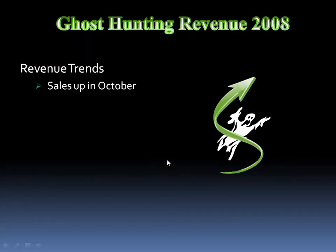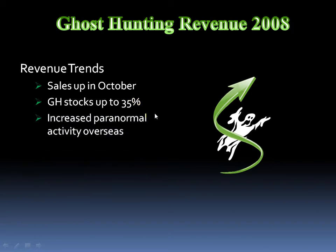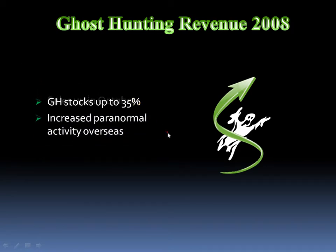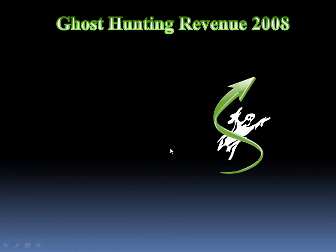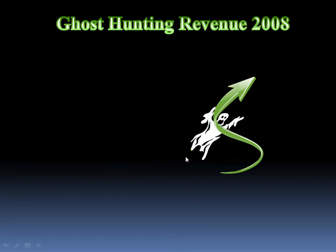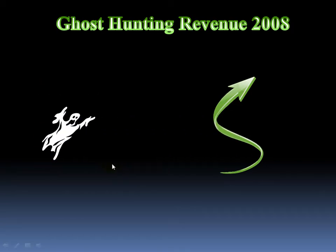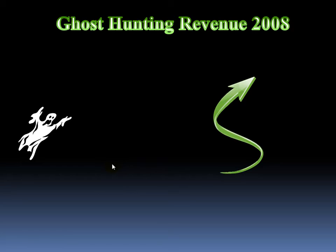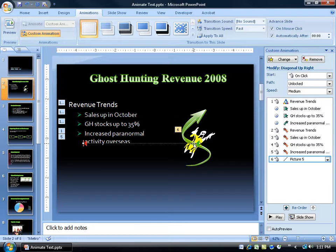I've got all my animation effects going through with the text, but let me click to get through those real fast. Pretty cool, but that's not the trend — he's supposed to go up. Let me hit the escape key. Maybe his first trend is to go left and then up.